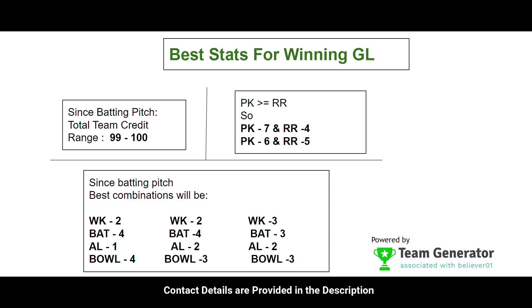For the best combinations in our software to get the best grand league teams, we can go with two wicketkeepers, four batsmen, one all-rounder, four bowlers (2-4-1-4), or two-four-two-three, or three-three-two-three — meaning three wicketkeepers, three batsmen, two all-rounders, three bowlers. Since most top players from both sides are wicketkeepers, we can increase the wicketkeeper count.